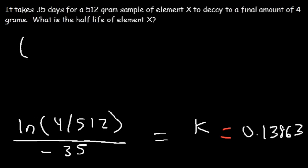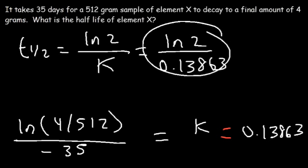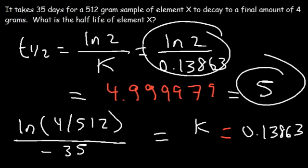Now that we have K, the half-life equals ln(2) divided by K. Typing in ln(2) divided by 0.13863 gives 4.999979, which is approximately 5 days. That's it for this video — thanks for watching and have a great day.